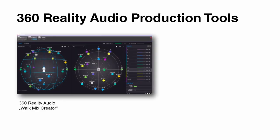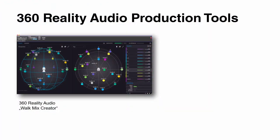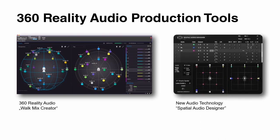The 360RA production tools come first with the 360 Reality Audio Walk Mix Creator — the toolset provided by the format to do native panning. We already learned about setting up your speaker system according to 360RA with the bottom line of three speakers in the front, and this is visually reproduced within the plugin, showing a 3D circle around the audience where you can place your objects in 3D space. 360RA production tools can also be used with the Spatial Audio Designer, which also has the possibility to export a 360RA delivery file for distribution.